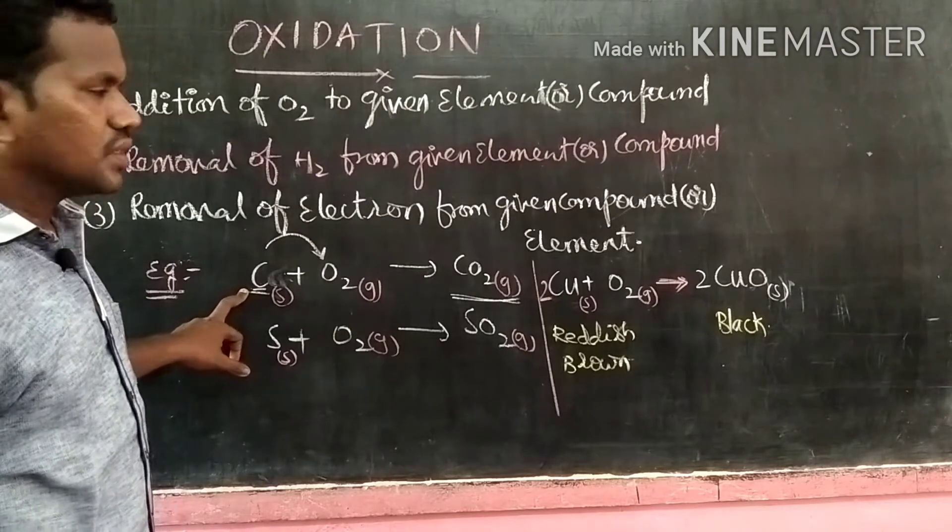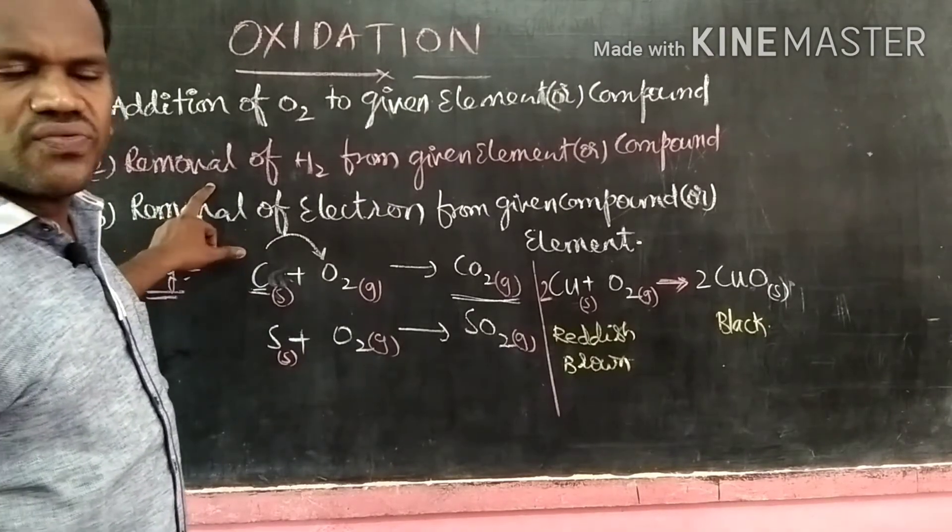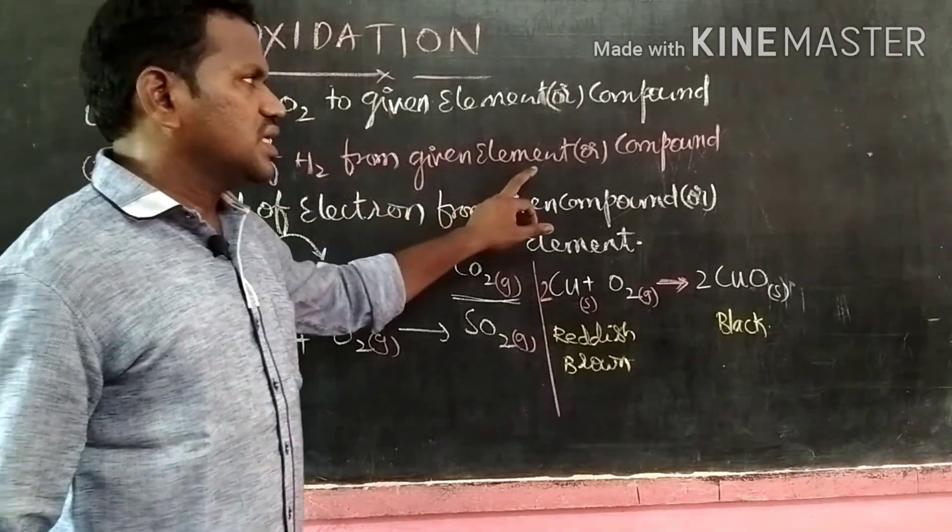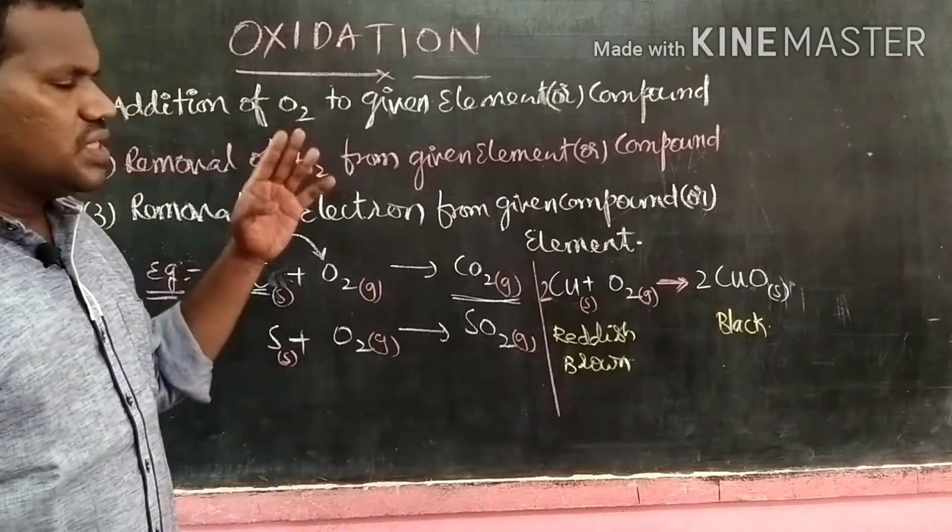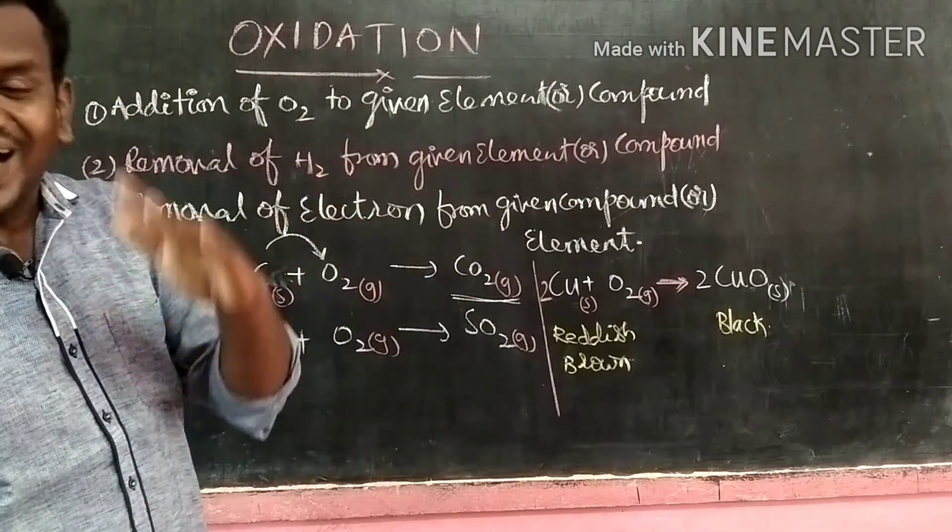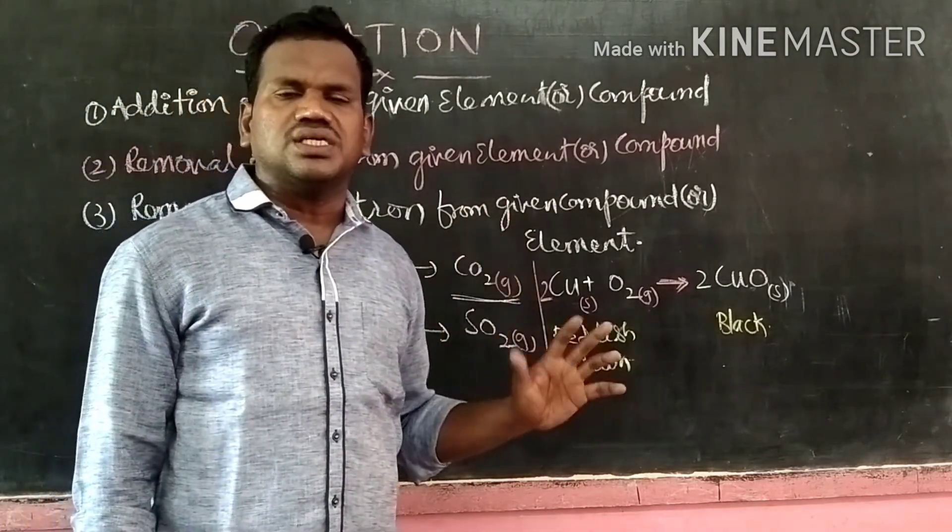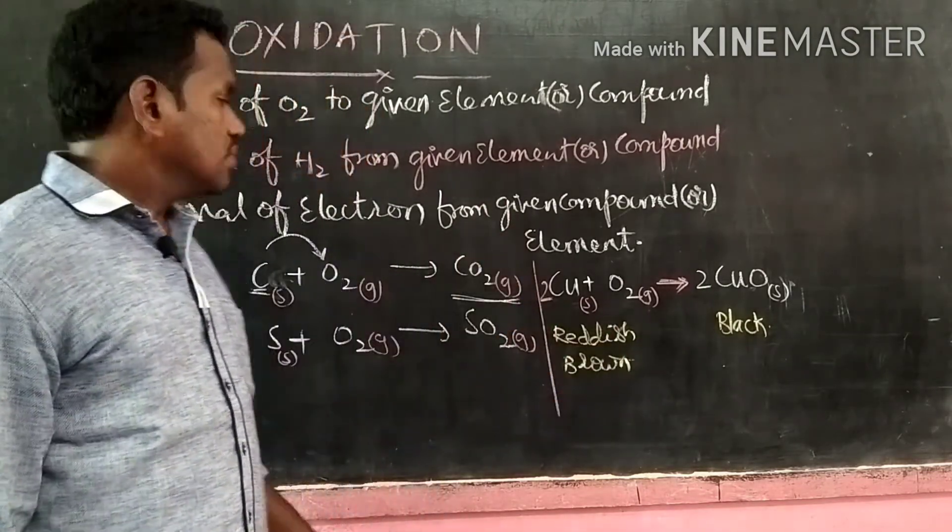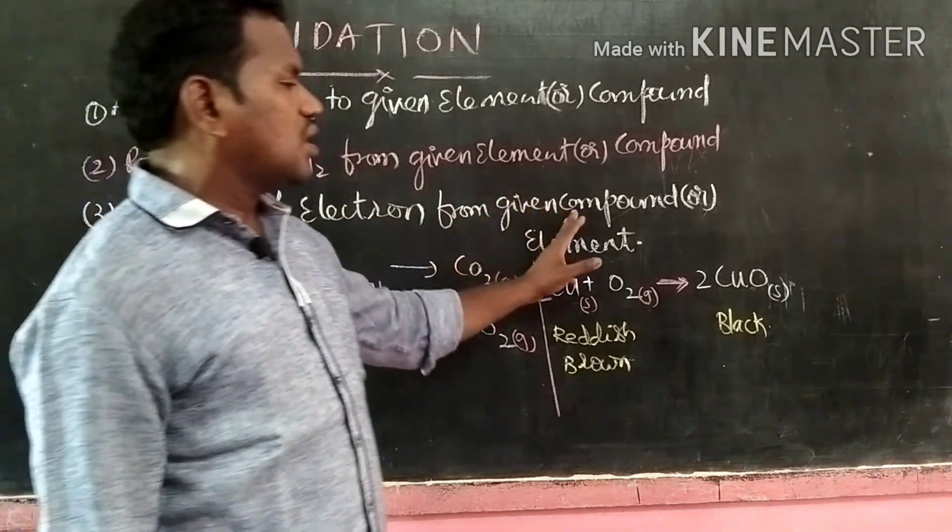Second one is removal of hydrogen from the given element or compound. Whatever it may be, the element will be there. If you remove the hydrogen from that, then we can say it is an oxidation reaction. One more is removal of electrons from the given compound or element.